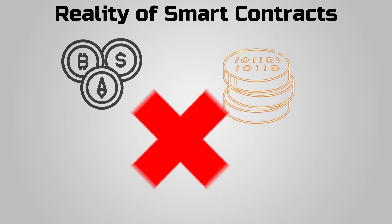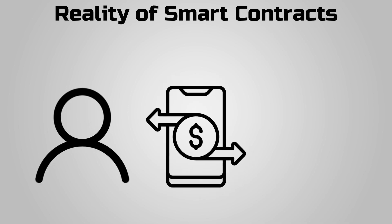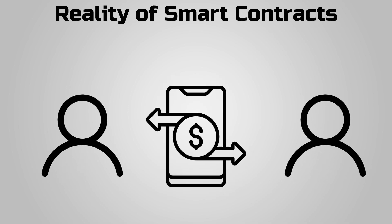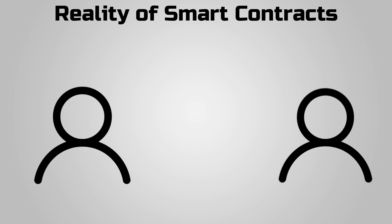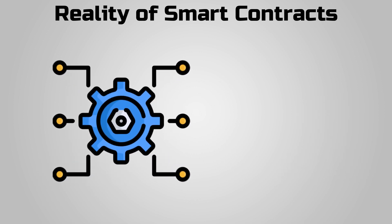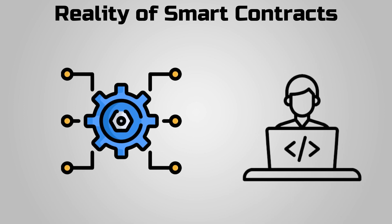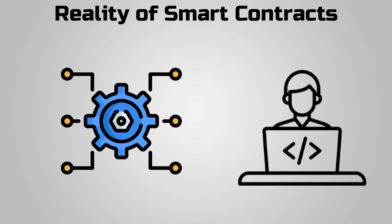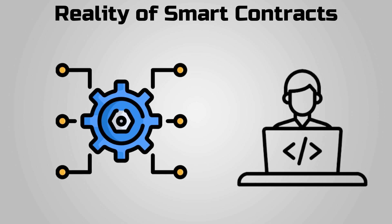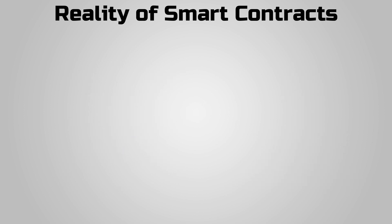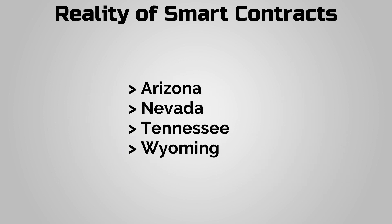Rather, they govern how tokens and cryptocurrencies are transferred from person to person. A smart contract is not necessarily legally binding — it is a set of rules made into software to guide the performance of a task derived from a prior, lawfully binding agreement between parties. Nonetheless, some states in the U.S., such as Arizona, Nevada, Tennessee, and Wyoming, have legislated the use of smart contracts.